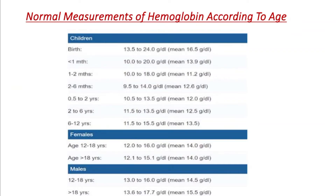The normal measurements of hemoglobin according to age: in case of children, at birth, the normal hemoglobin range is 13.5 to 24 gram per dL, and the mean is 16.5 gram per dL. The unit of hemoglobin is gram per dL, where dL means deciliter.